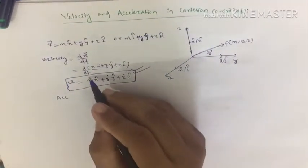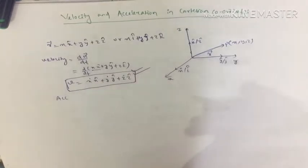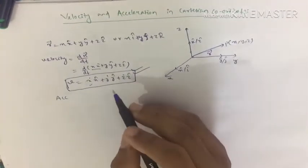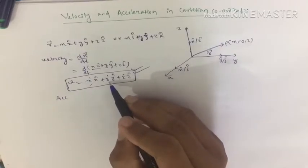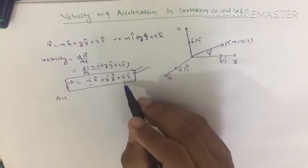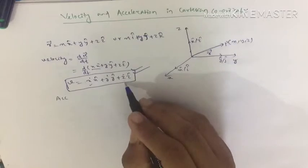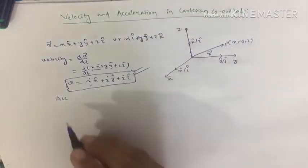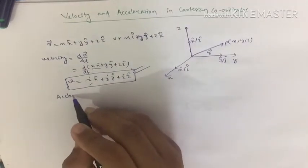Here ẋ represents the component of velocity along the x-direction, ẏ represents the component of velocity along the y-direction, and ż represents the component of velocity along the z-direction.